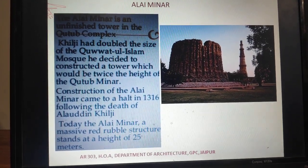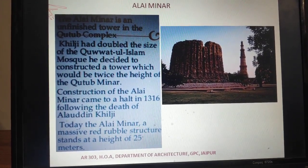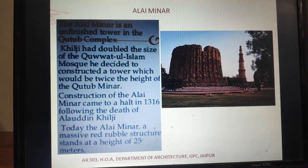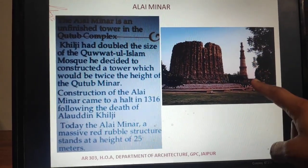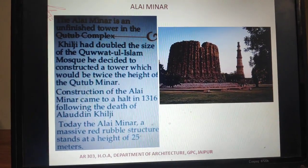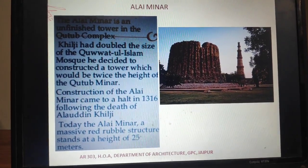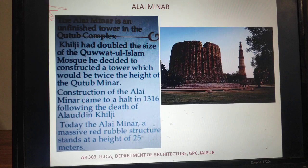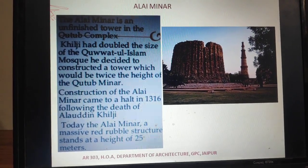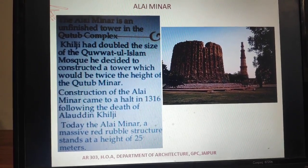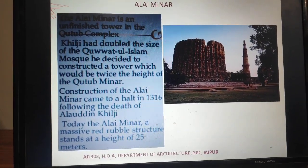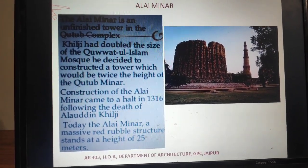Alai Minar is constructed in random rubble masonry. You can see its proportion compared to the Qutub Minar — only the ground floor was constructed, and it was only 25 meters high. As mentioned, Alauddin Khalji died quickly, and the work was closed in 1316 AD, leaving the minar incomplete.